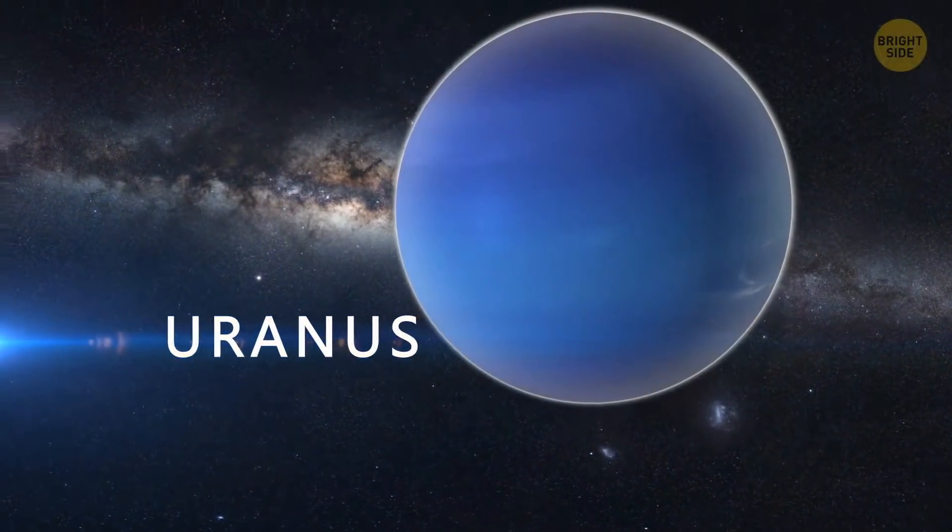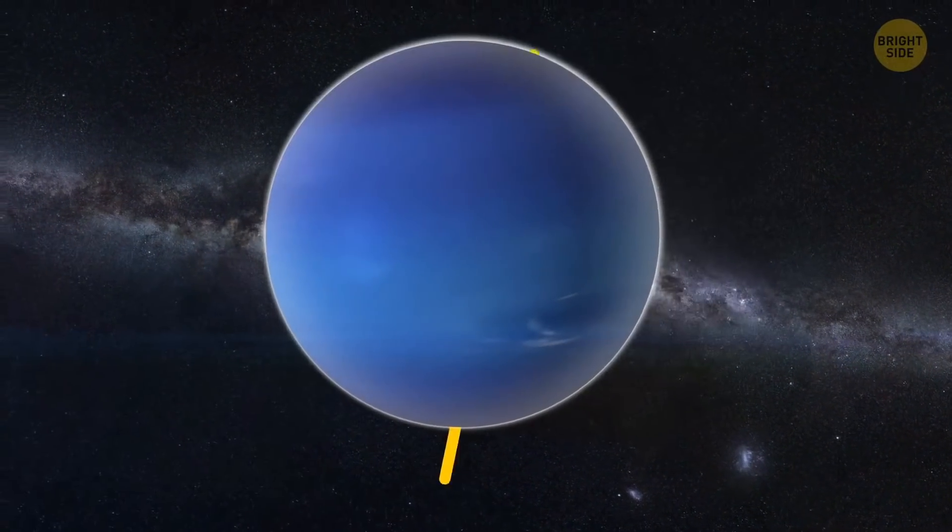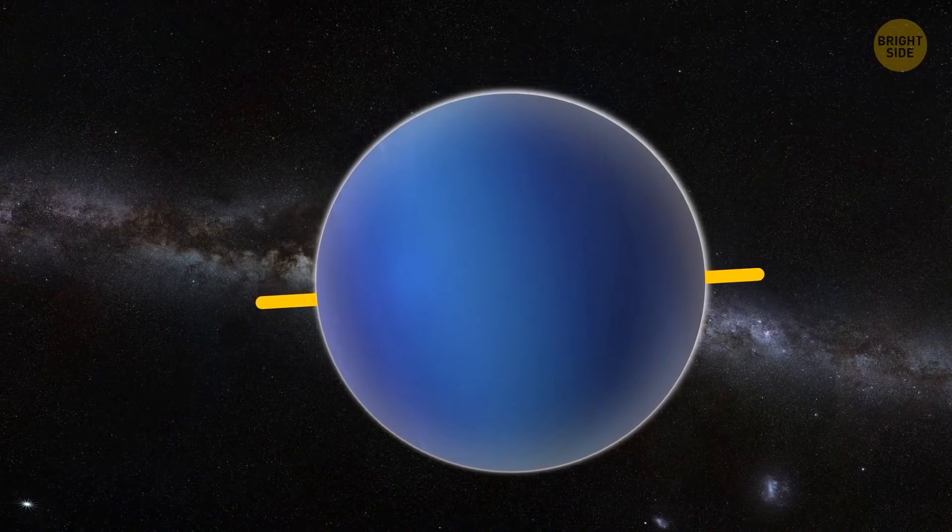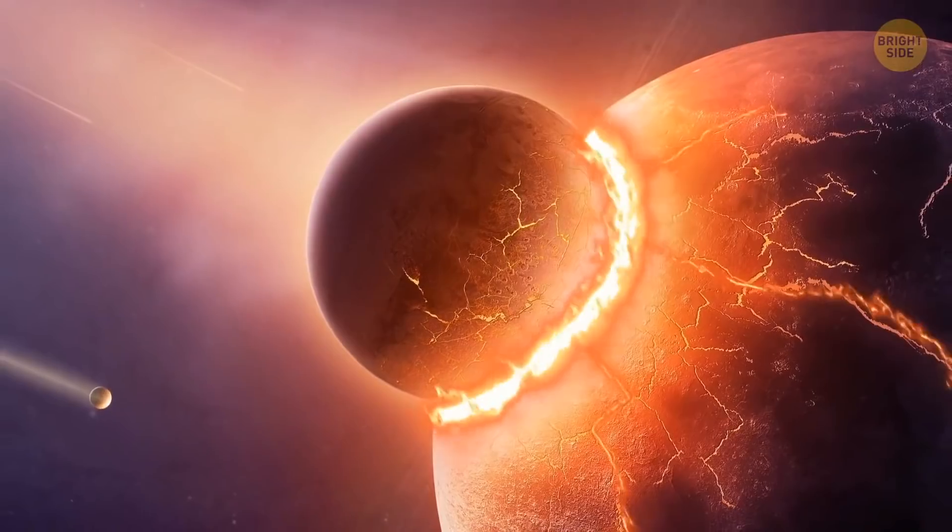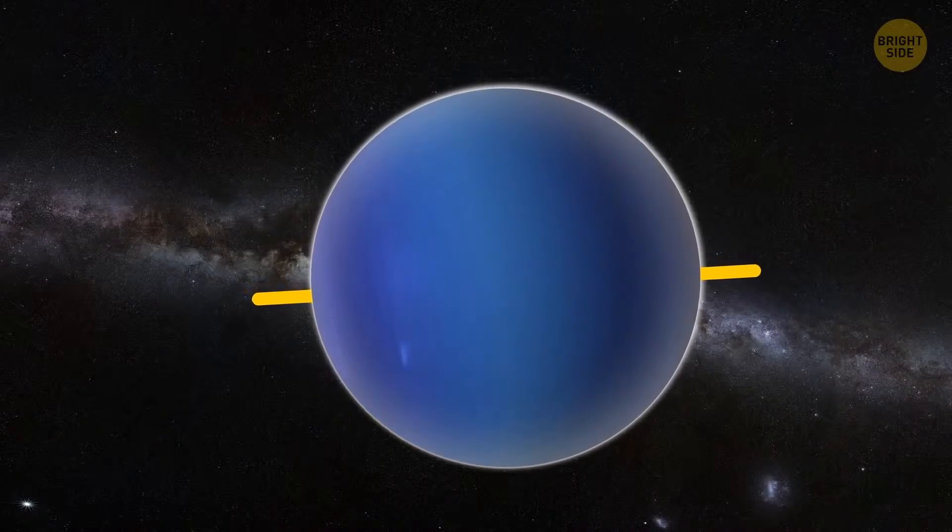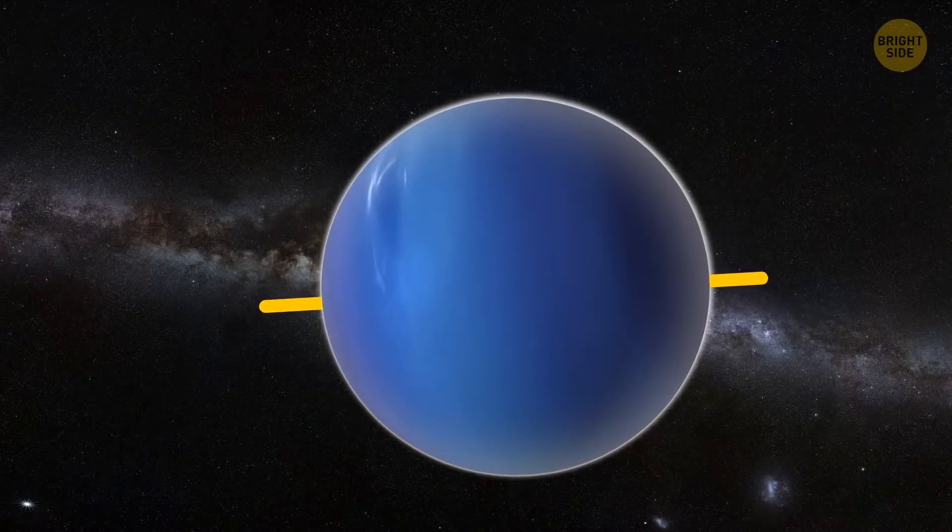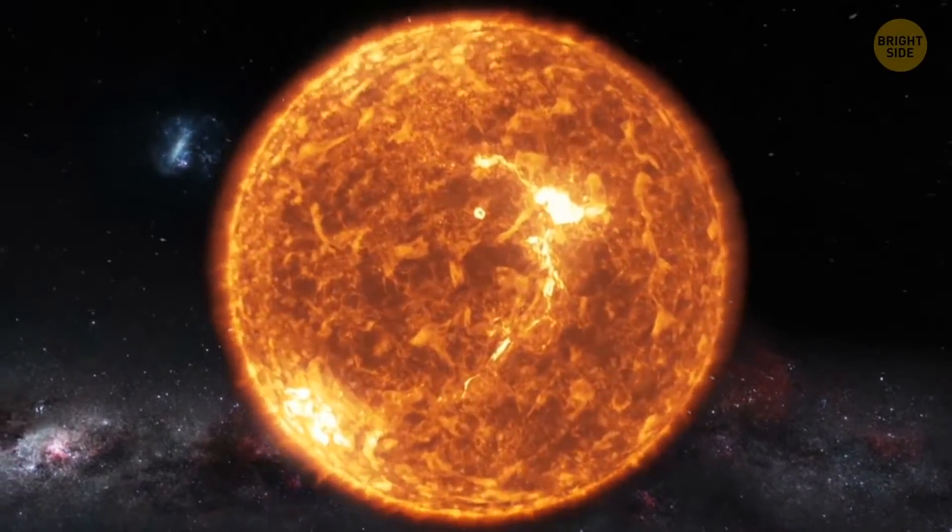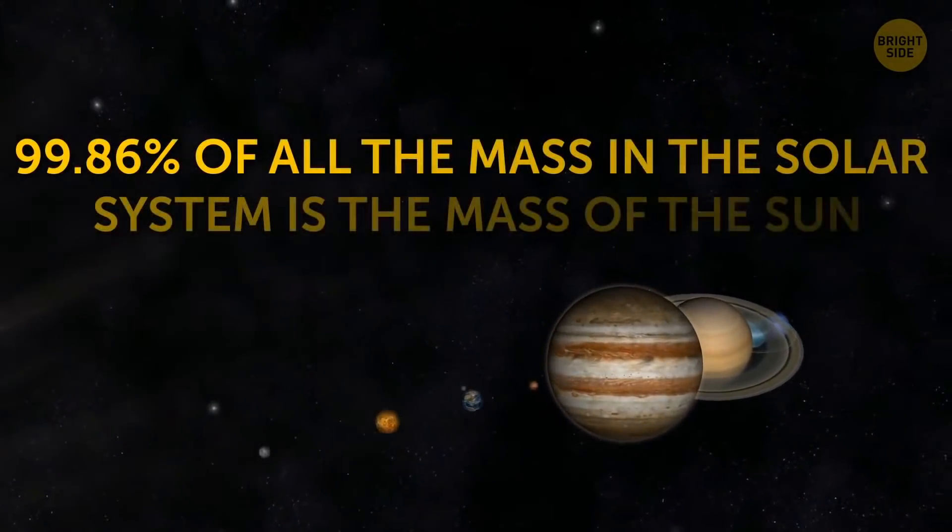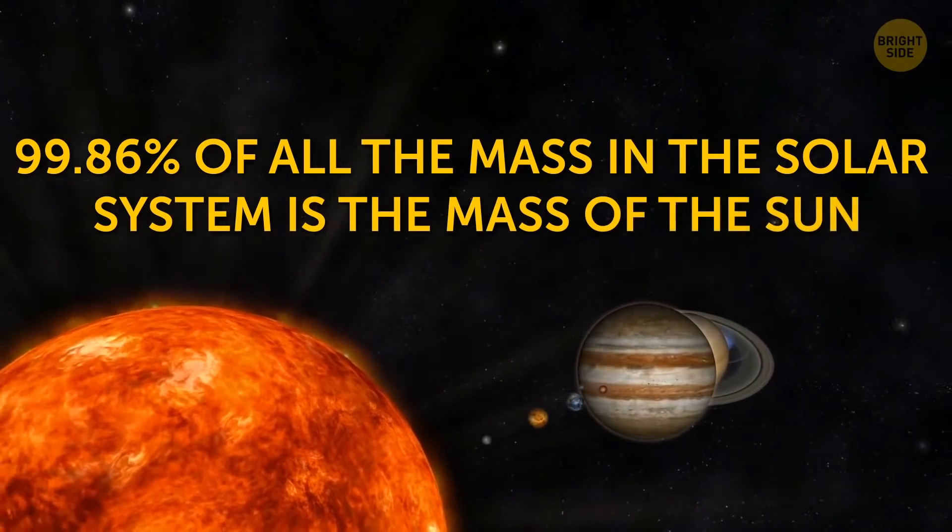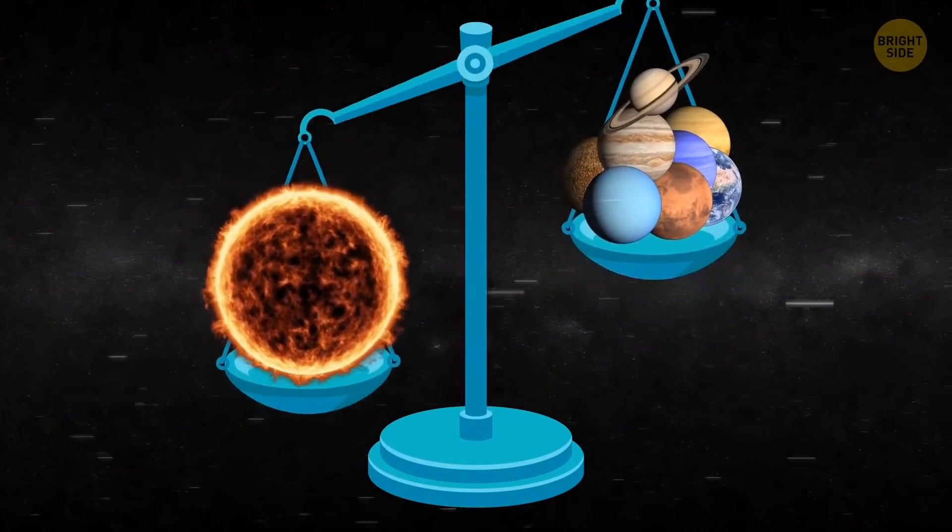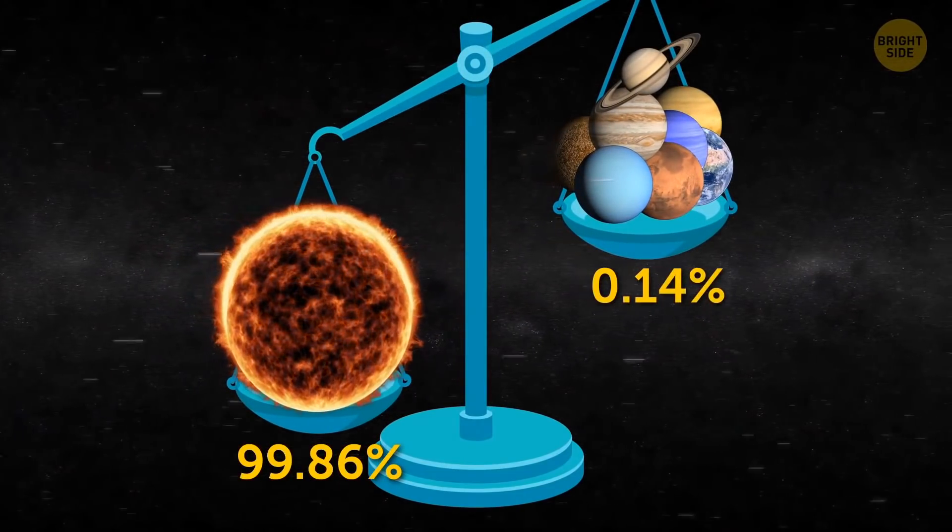The planet Uranus rotates on its side, and astronomers have no idea why the planet has chosen such an unusual position. The culprits could be ancient mega-powerful collisions, but so far, it's just a theory. By the way, this is the only planet laying on its side. Our Sun is insanely massive. Want some proof? Well, 99.86% of all the mass in the solar system is in the mass of the Sun, in particular, the hydrogen and helium it's made of. The remaining 0.14% is mostly the mass of the solar system's eight planets.